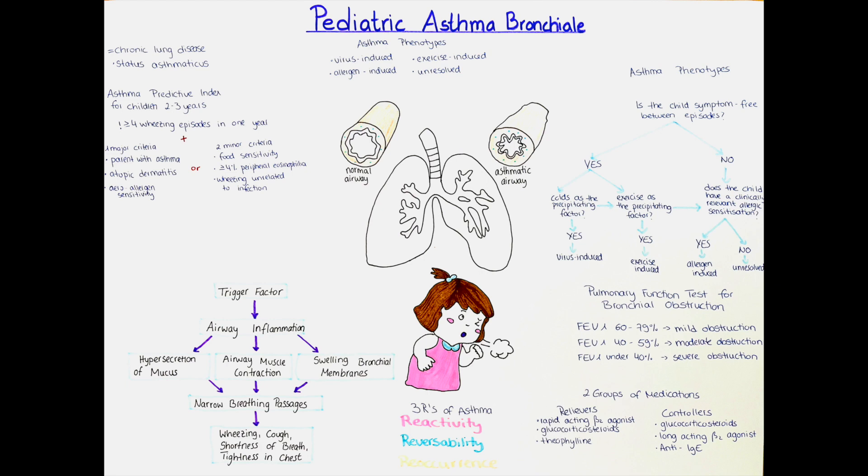First of all, what is asthma? Asthma is a chronic lung disease which is characterized by periods without symptoms and sudden difficulty in breathing due to inflammation and swelling of the airways, together with mucous formation and bronchoconstriction. This state is also known as status asthmaticus or asthma attack. Important to note is that this obstruction is reversible.